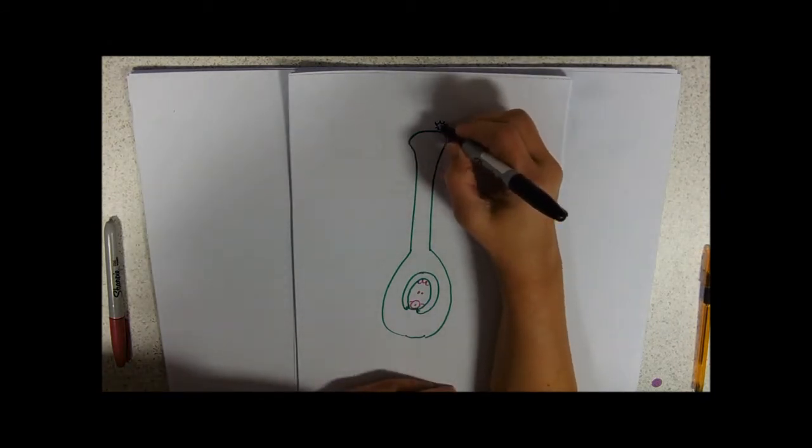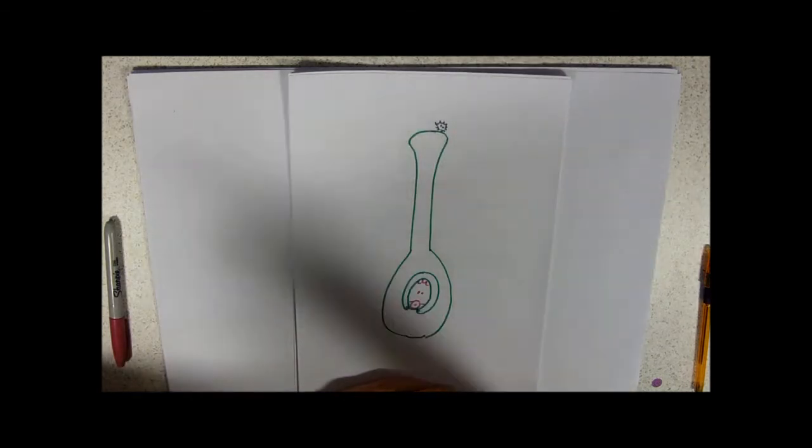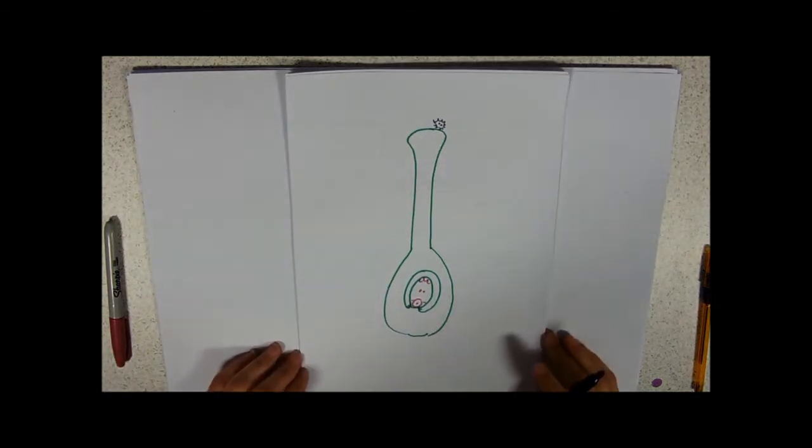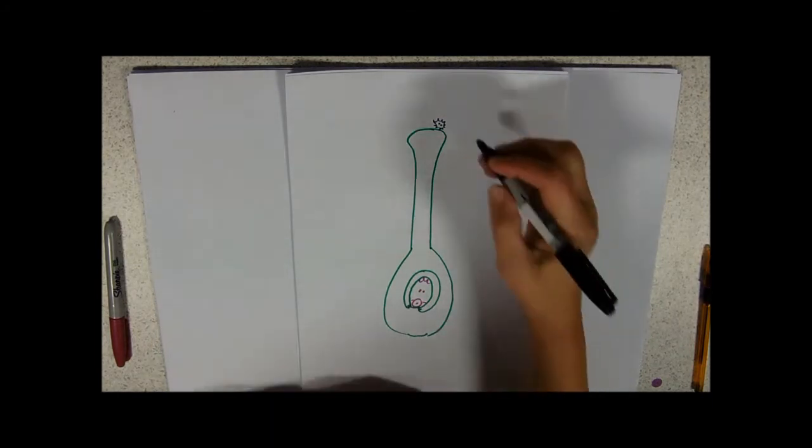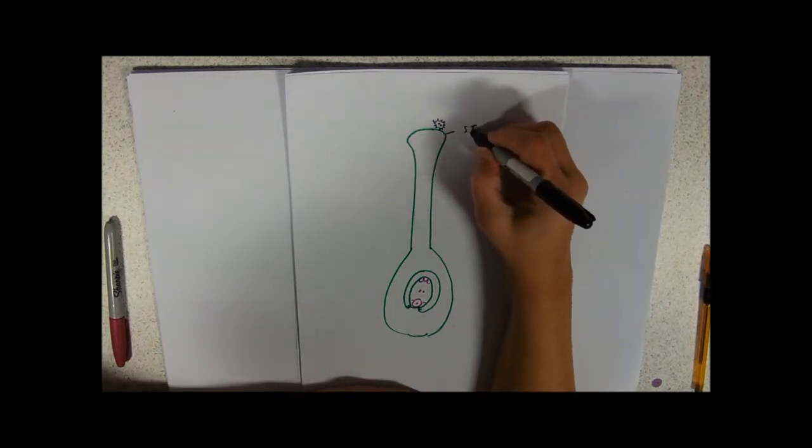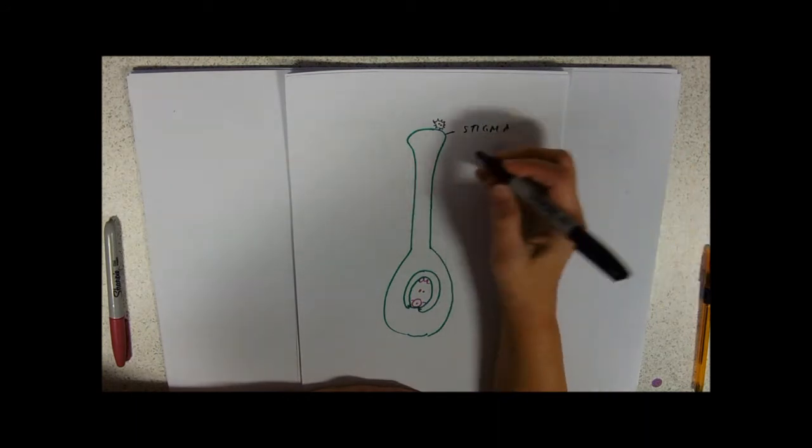Inside of the pollen grain you've got two nuclei: the tube nucleus and the generative nucleus. The first thing is that it lands on top of the stigma up at the top of the female parts of the plant.